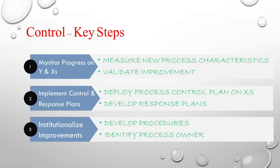As we move into the control phase, there are three important things to look at. The first one is to monitor the progress on your Y's and X's. In any process, if you have different statistically significant X's which are controlling your Y, you need to monitor the progress of these X's and also the progress of Y. We need to measure the new process characteristics and validate the improvements, which were achieved in the improve phase.